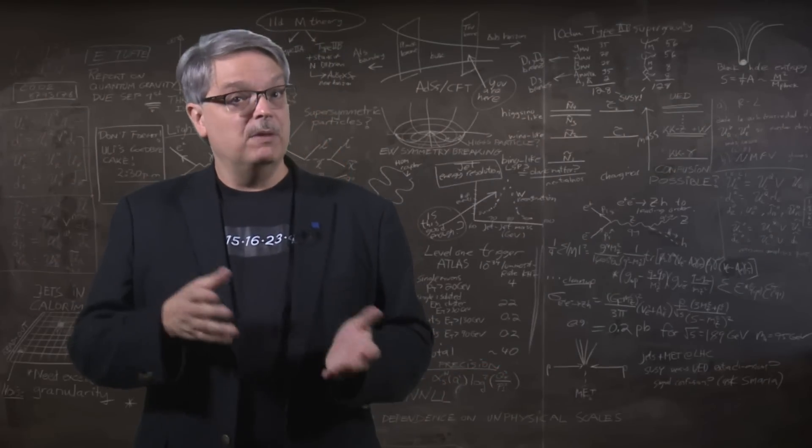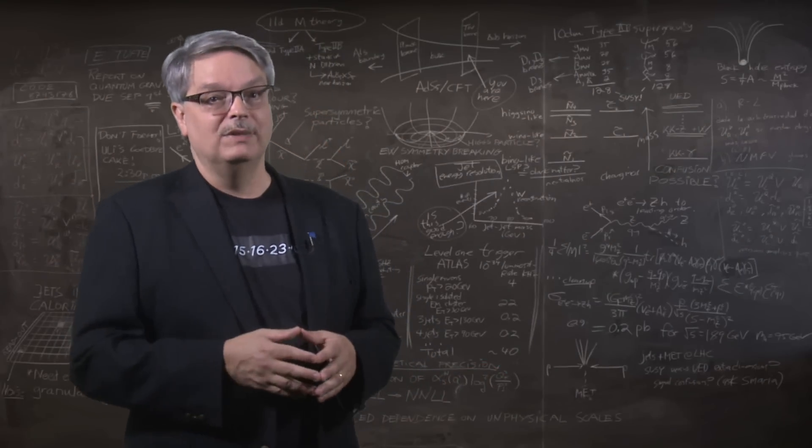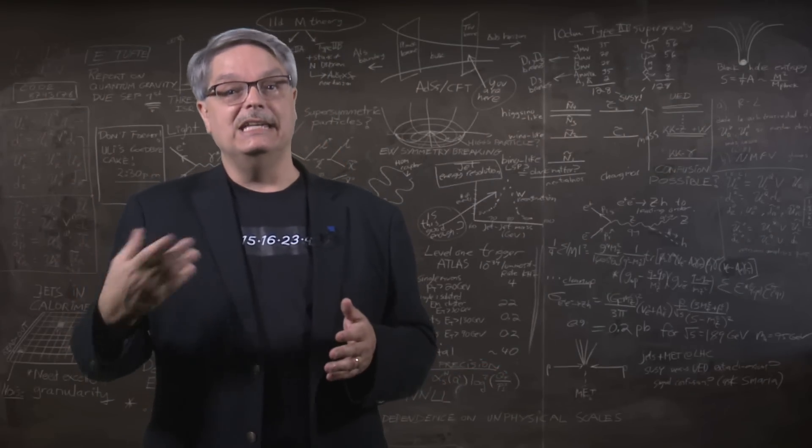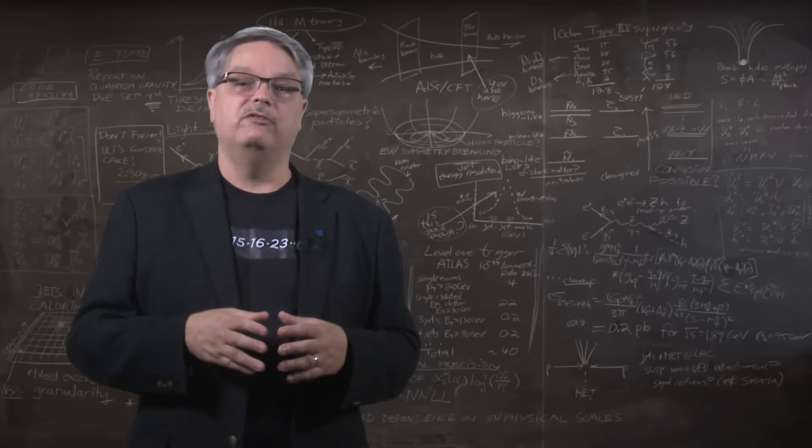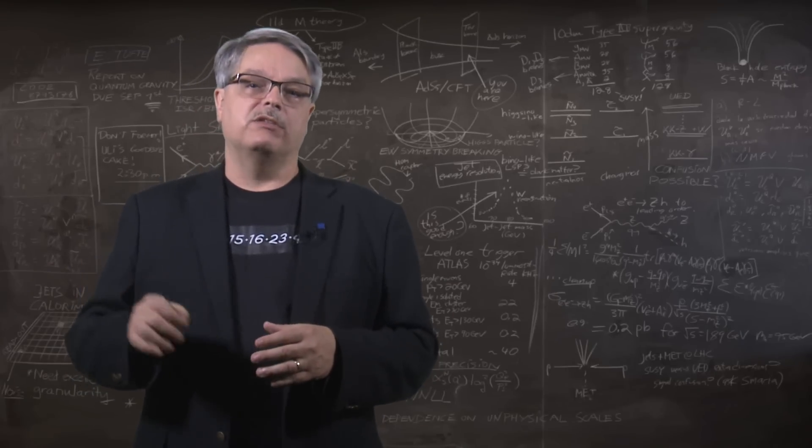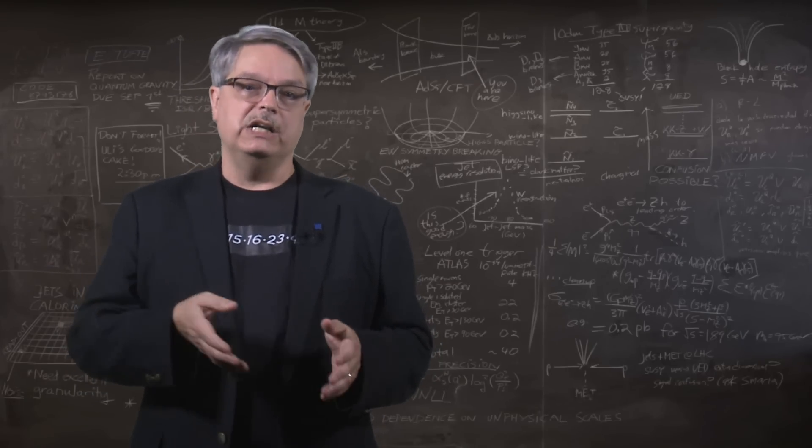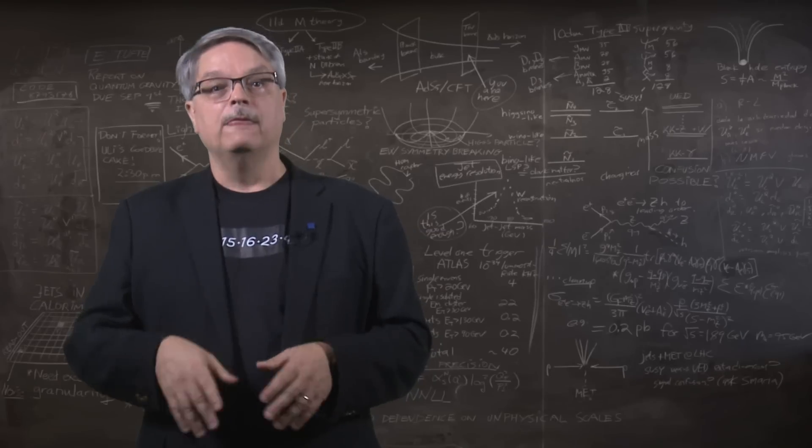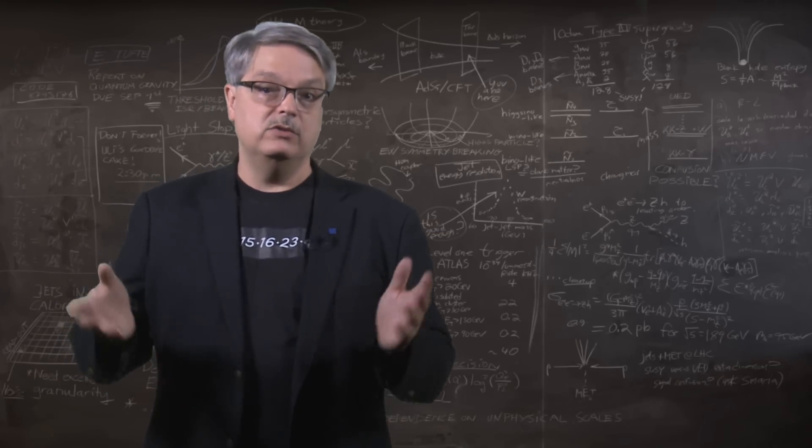So what would happen if we swapped the masses of protons and neutrons? Well, protons would decay into neutrons and other particles in about 15 minutes. Thus, in the 380,000 years it took for hydrogen atoms to form in our universe, all of the protons would have decayed into neutrons.